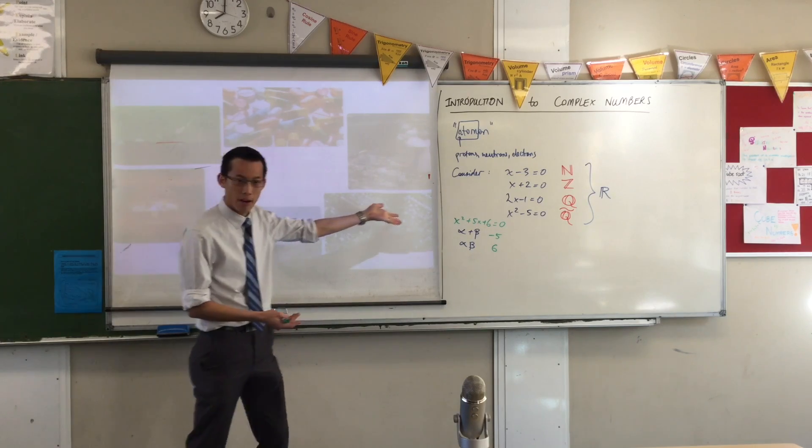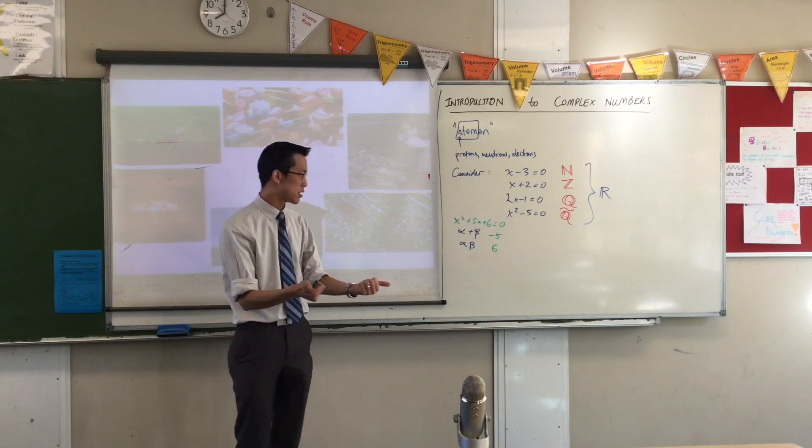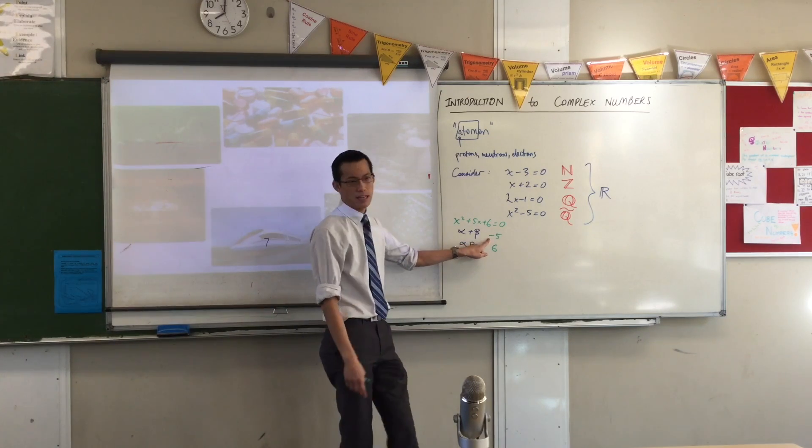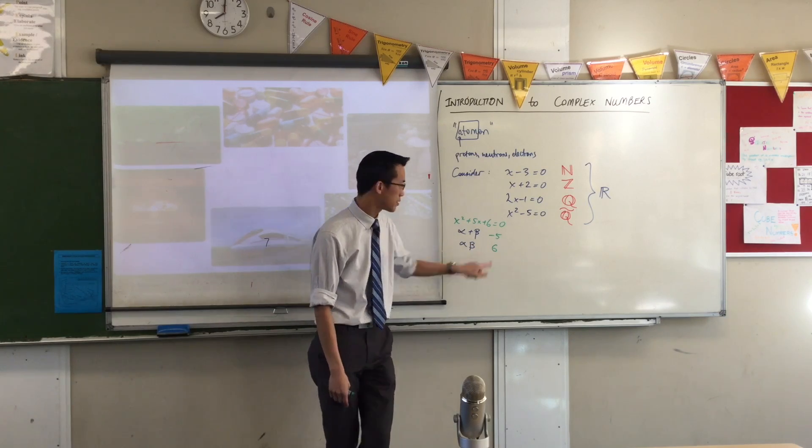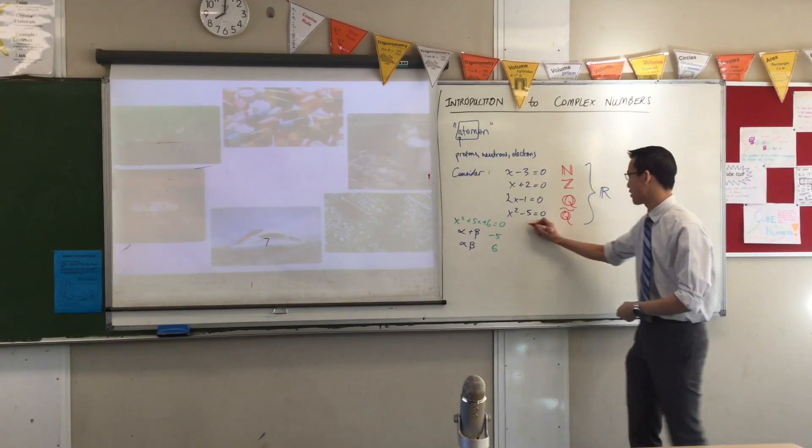Which means that the solutions, the roots, the alpha and the beta, are going to be negative 2 and negative 3. Well, that makes sense. You add negative 2 and negative 3, you'll get this. You multiply negative 2 and negative 3, you get this. So it's fine.